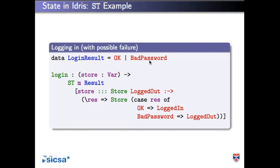So we need to refine that type slightly. Just as we did with the door programs, instead of giving a plain transition from input to output, the output thing is a function of the result. This lambda 'res' takes whatever the result happens to be and calculates the output state at compile time depending on which branch of the program you're in. So we're expressing that the environment has a store starting logged out, and when finished that store is either logged in or logged out depending on whether the operation was successful — precondition and postcondition.